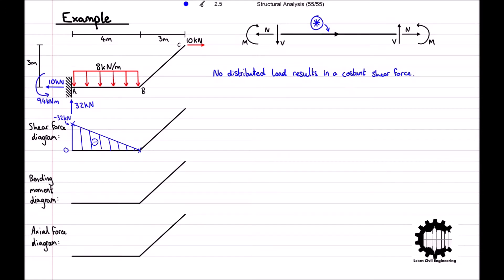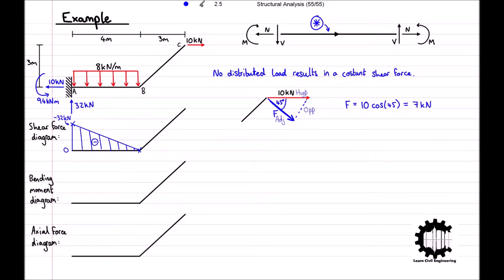We need to calculate the component of that force acting perpendicularly to the bar, and for this we will use trigonometry. As bar BC has a horizontal and vertical length of 3 meters, we know that the angle between bar BC and the horizontal plane is 45 degrees. Drawing on the component of the horizontal force that is perpendicular to the bar, we can see that the hypotenuse side is 10 kilonewtons, and we are trying to find the adjacent side. Using trigonometry, the magnitude F is equal to 10 times cosine 45, which equals 7 kilonewtons rounded to the nearest integer.